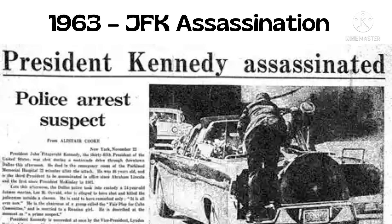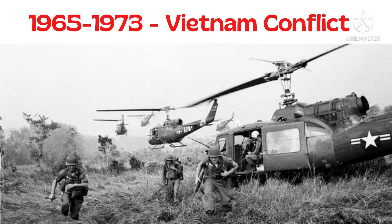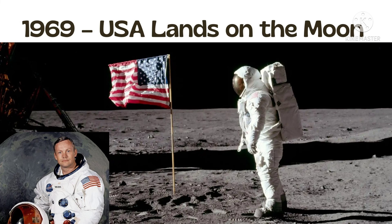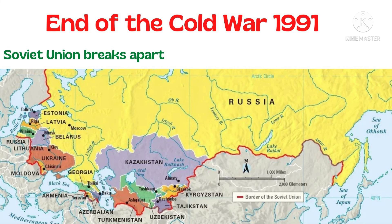In 1962, the Cuban Missile Crisis was the most tense moment of the Cold War. In 1963, JFK was assassinated — many believed he was killed by the Soviet Union; President Johnson almost declared war on the Soviet Union in retaliation. From 1965 to 1973, the Vietnam conflict: the Soviet Union controlled communist North Vietnam, the USA influenced democratic South Vietnam, but the USA came out as the loser. In 1969, the USA landed on the moon — Neil Armstrong was the first man on the moon.